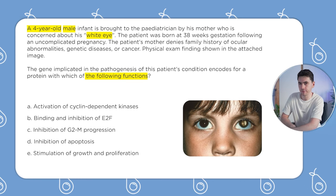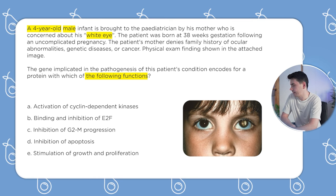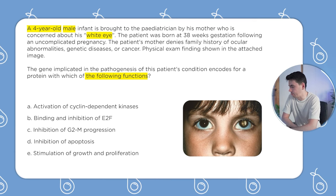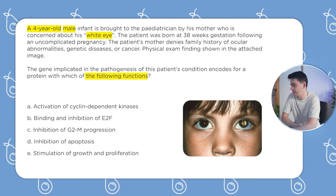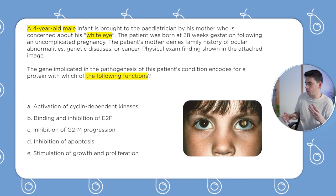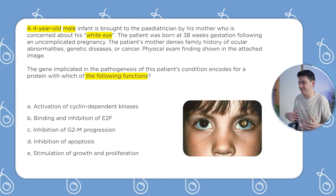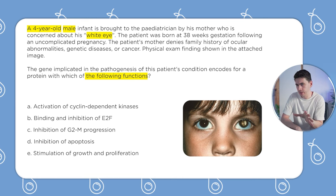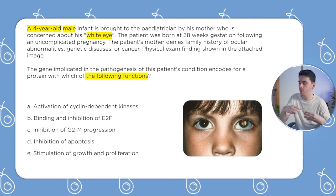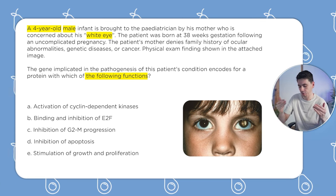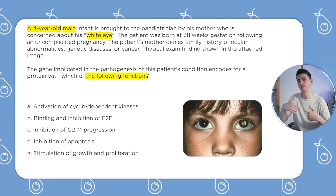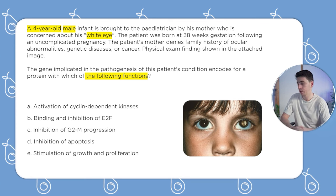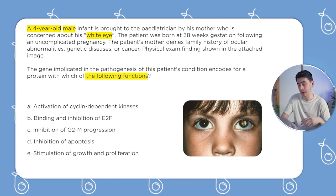Let's read the answer choices. A: activation of cyclin-dependent kinases. B: binding and inhibition of E2F. C: inhibition of G2M progression. D: inhibition of apoptosis. E: stimulation of growth and proliferation. These are all functions to do with the cell cycle and cancer. A little bit of content knowledge: you may have heard of tumor suppressors and oncogenes. A tumor suppressor regulates the cell cycle and prevents cancer; a proto-oncogene can turn into an oncogene and drive cancer formation.